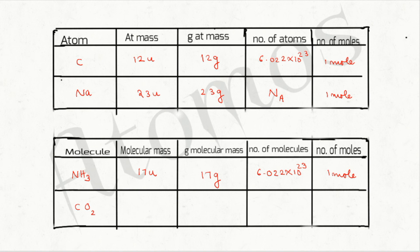For carbon dioxide: the molecular mass is 44 units, so the gram molecular mass is 44 grams. 44 grams of carbon dioxide equals 1 mole, because it contains 6.022 × 10²³ molecules of carbon dioxide. Writing and learning these examples will keep the concept clear and prevent mistakes when solving problems.